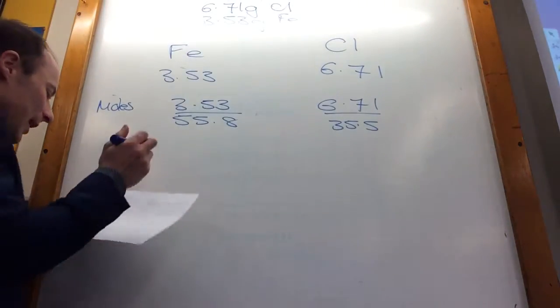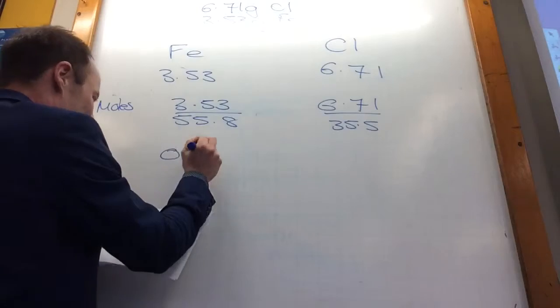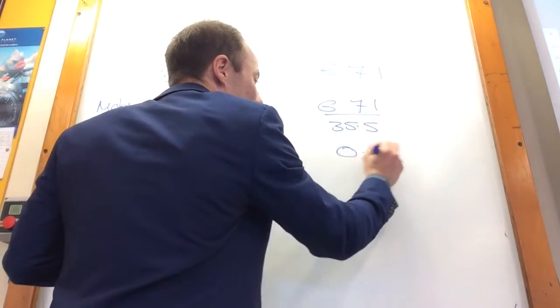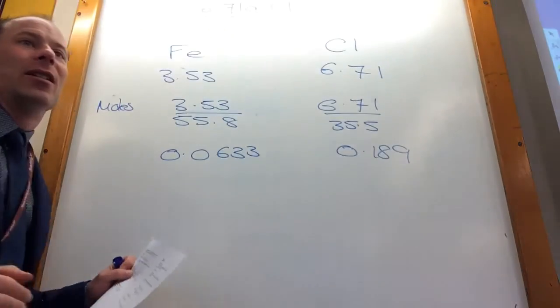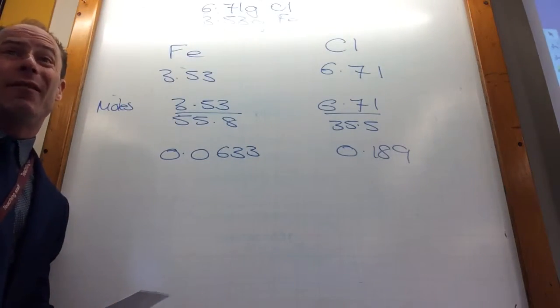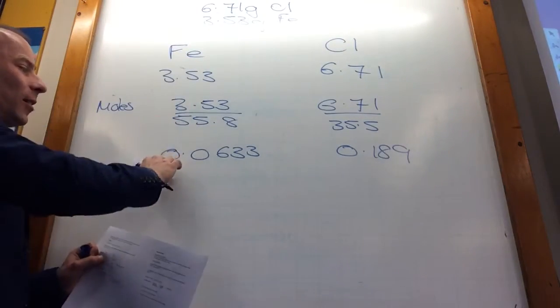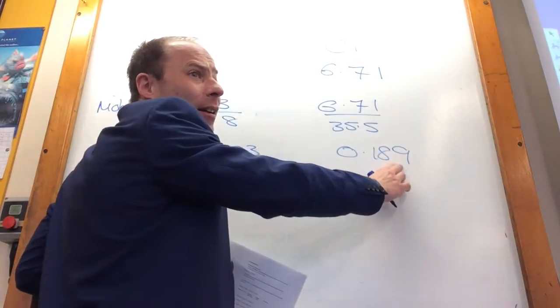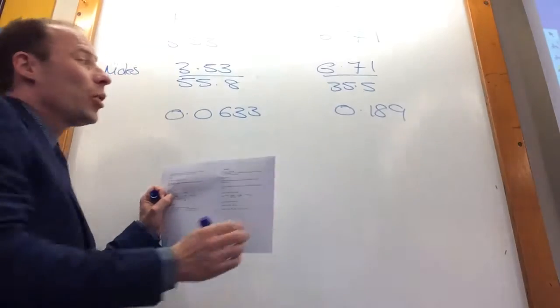If you do that, you get that to be 0.0633. That is 0.189. Okay, could I have a formula which said iron, 0.0633, chlorine, 0.189? That would be madness. So what can I do?